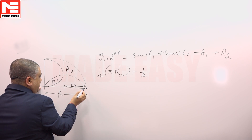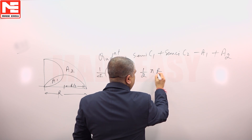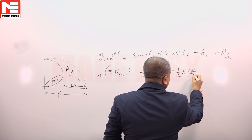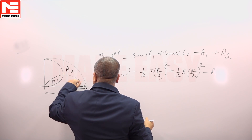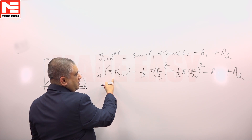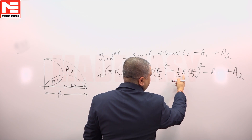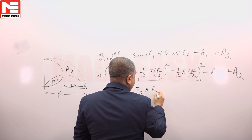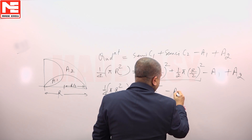The radius of the quadrant was r and the radius of the semicircle is r/2. We have: (1/2)π(r/2)² is the area of the first semicircle, plus (1/2)π(r/2)² is the area of the second semicircle, minus a1 — which is included in both and has been counted twice — plus a2. So: (1/4)πr² = (1/2)π(r/2)² + (1/2)π(r/2)² − a1 + a2, which simplifies to (1/4)πr² = (1/4)πr² − a1 + a2.